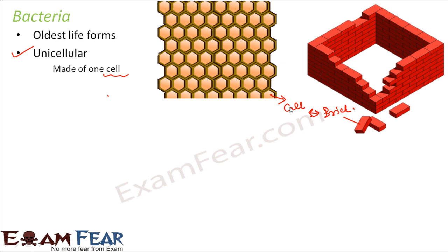Based on the number of cells in an organism, there are two types: unicellular and multicellular. Uni means one, so unicellular means an organism made up of just one cell — just one brick forming the entire building. Bacteria are unicellular. Human beings, on the other hand, are multicellular — our body is made up of multiple cells.